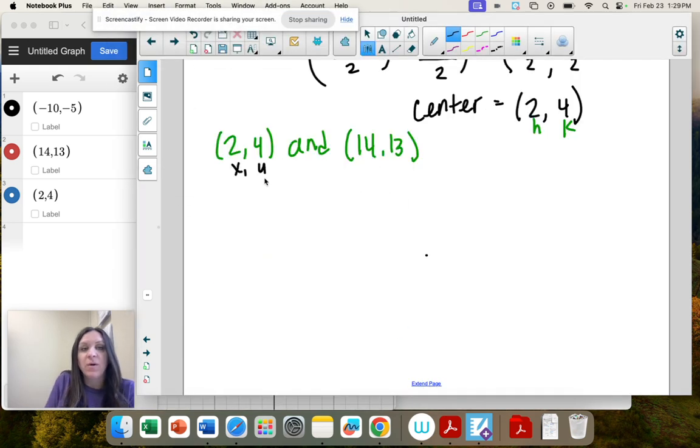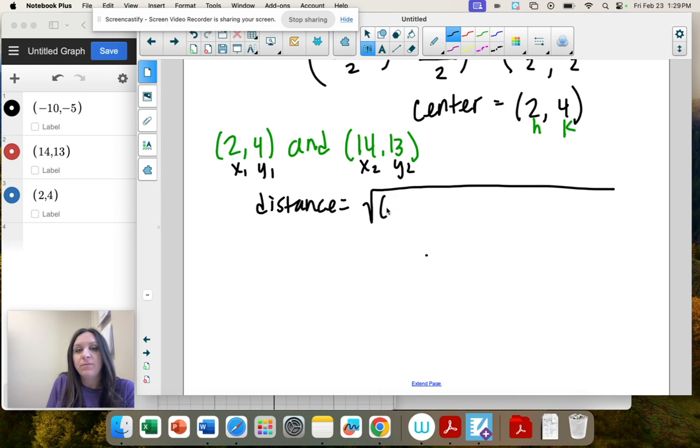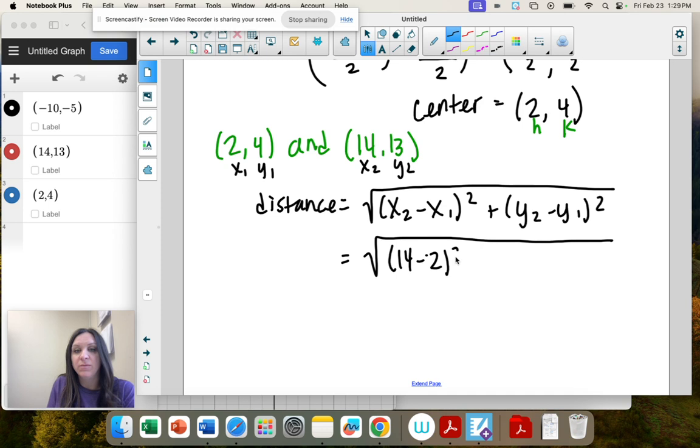So x1, y1, x2, y2, and the distance formula is change in x squared plus change in y squared. So x2 is 14, x1 is 2 squared. y2 is 13, y1 is 4 squared.